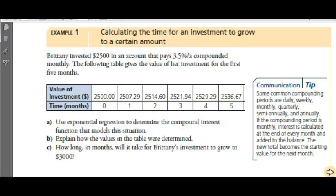Brittany invested $2,500 in an account that pays 3.5% per annum compounded monthly. The following table gives the value of her investment for the first five months. She gets 3.5% per year, but they're going to pay that every month — so they're not going to pay 3.5% every month, they're going to pay a smaller amount.